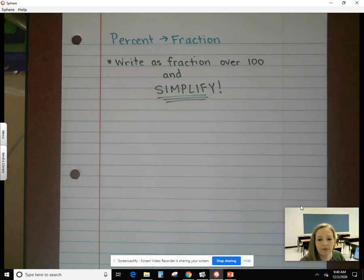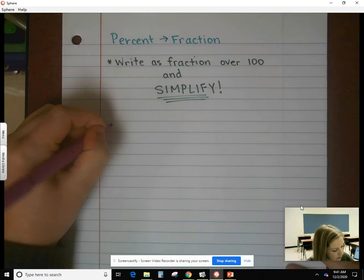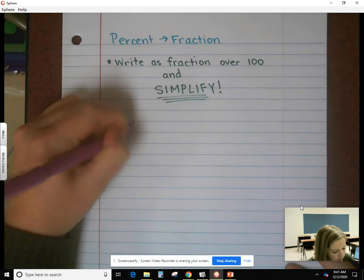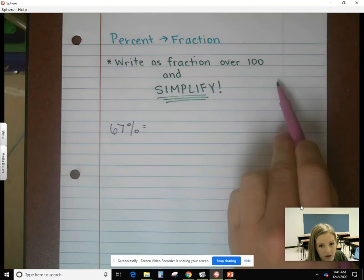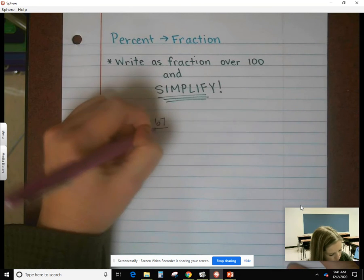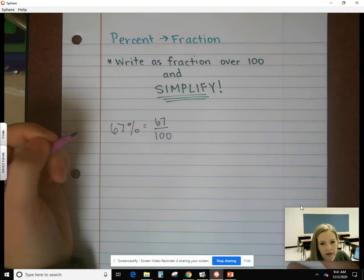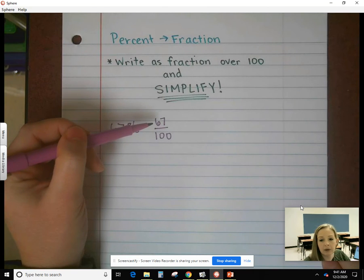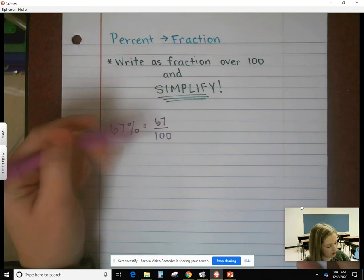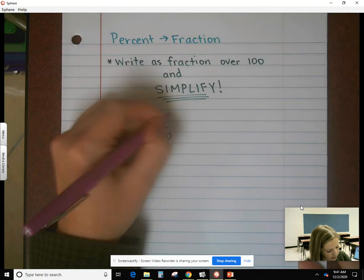Remember that when you simplify a fraction, you only simplify if you have to. Sometimes you'll get lucky. One example would be 67%. We're going to write that as a fraction over 100: 67 over 100. Then I look to see if I can simplify. 67 is a prime number, so the only thing I can divide that by is 67, which does not go into 100. So that's my answer.